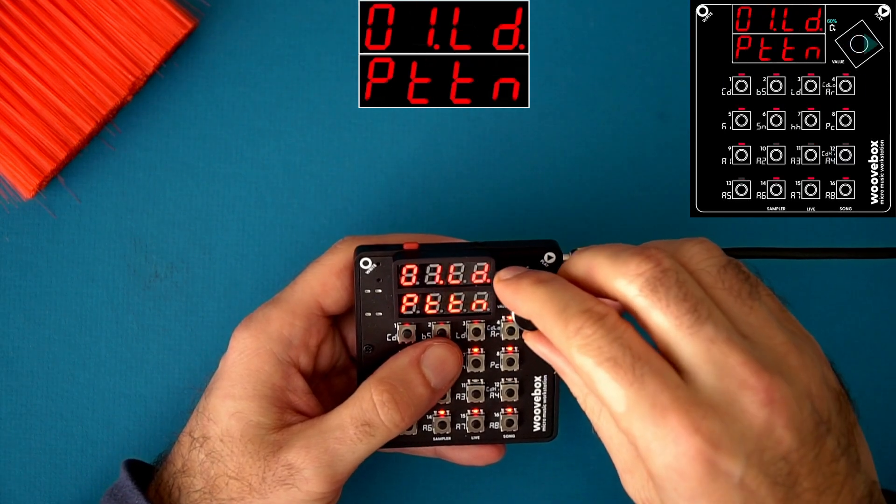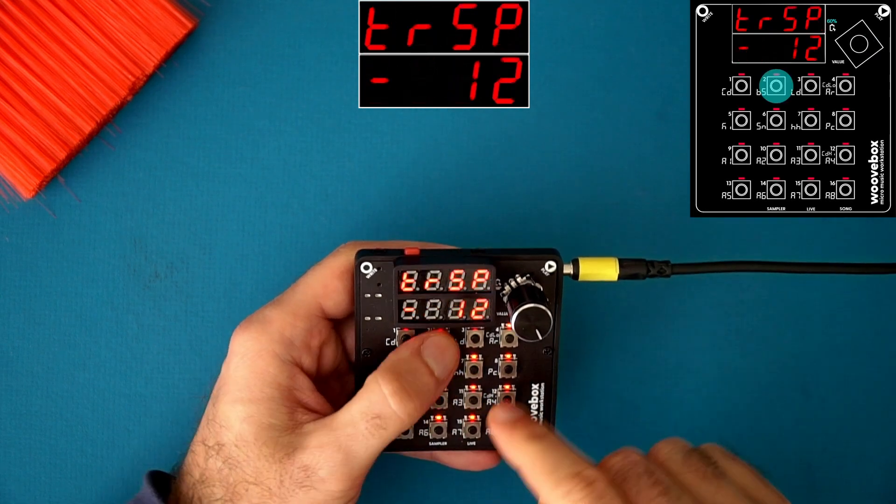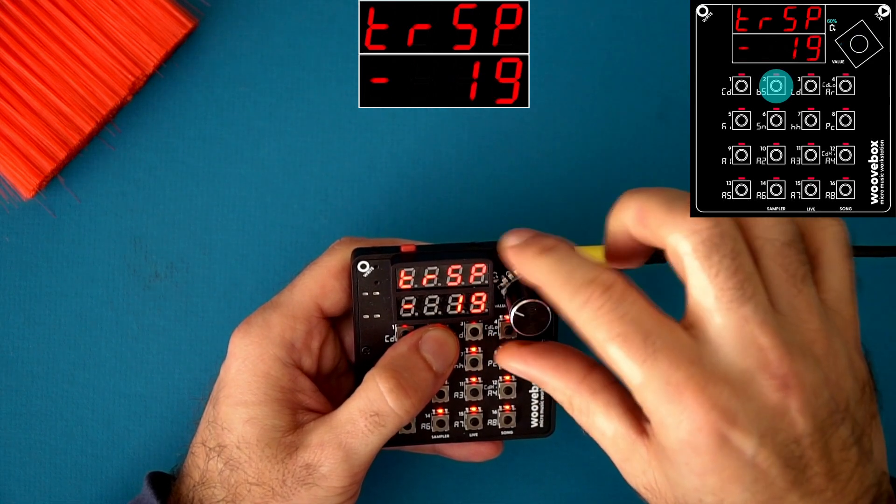And as a reminder, if you want lower or higher notes, you can go on the global page and hold key two to change the transposition settings. I'm going to leave mine at minus 12.